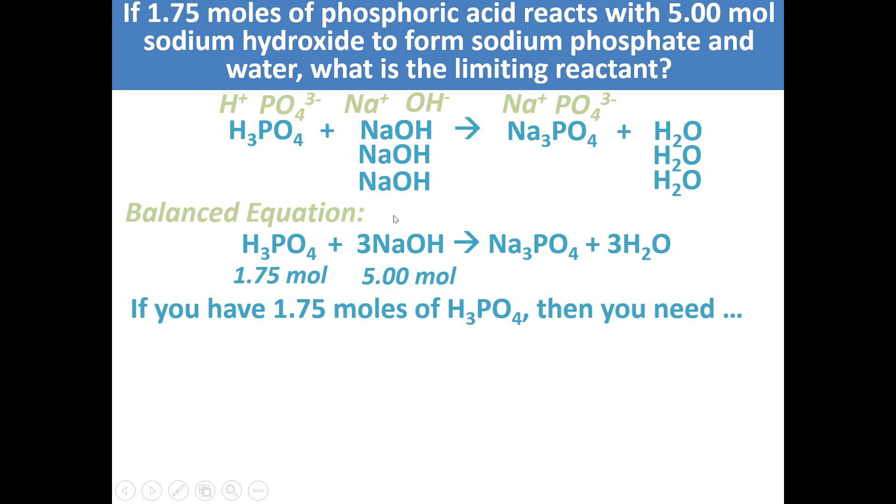What we're trying to decide is we're trying to figure out how many moles of NaOH is needed if we have 1.75 moles of phosphoric acid. We have 1.75 moles available and we want to calculate how many moles of NaOH are needed. So we start off with the amount of phosphoric acid, 1.75 moles.